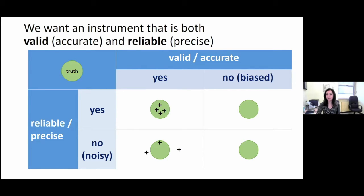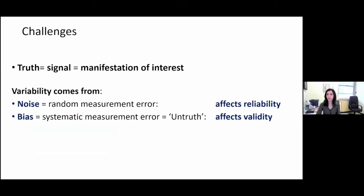Sometimes instruments can be valid but not precise, generating some noise. Or they can be very precise but completely invalid because they are not measuring the target domain. Or they can be the worst instruments ever — being neither reliable nor precise.